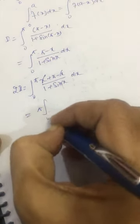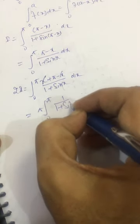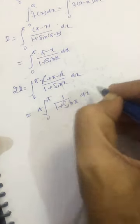This x cancels with this, we are left with pi times integral 0 to pi of 1 divided by (1 plus sin x) dx.